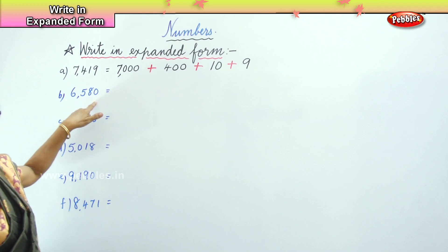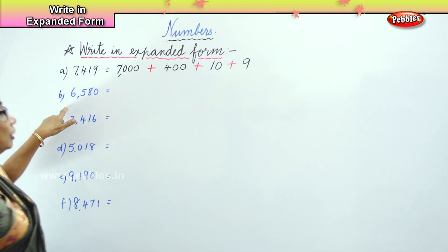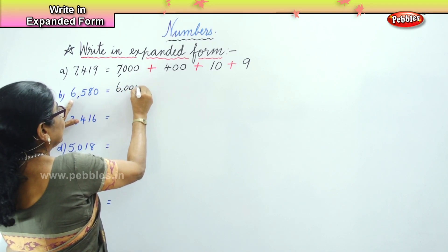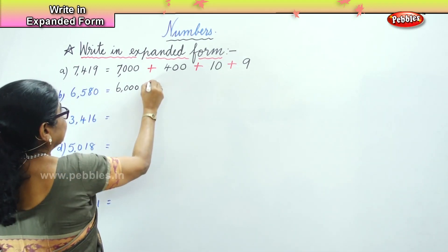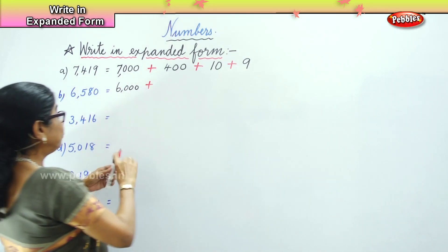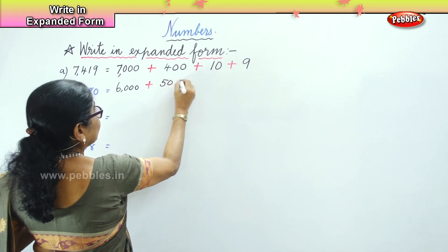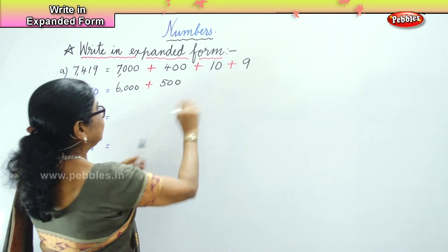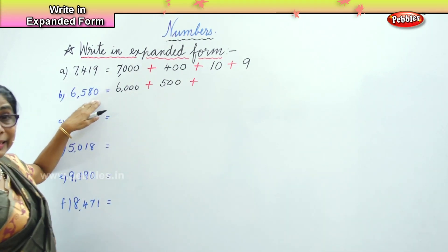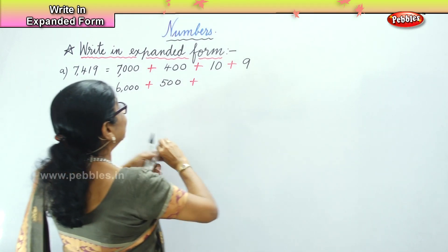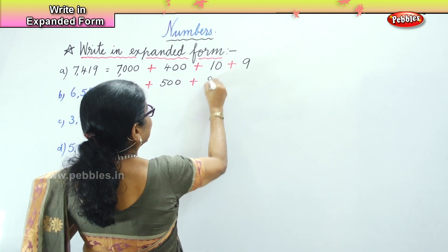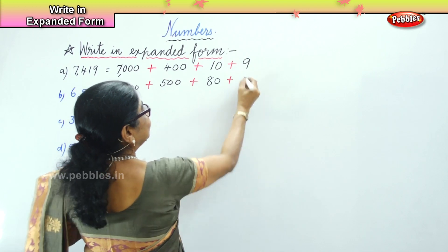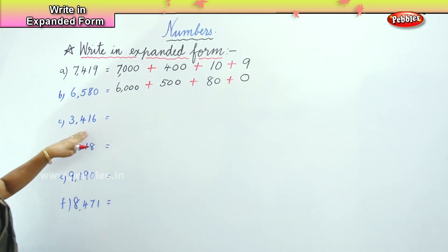The first number is 6,5,8,0. So what is the first one? Six thousand, plus five hundred, plus eighty, plus zero.